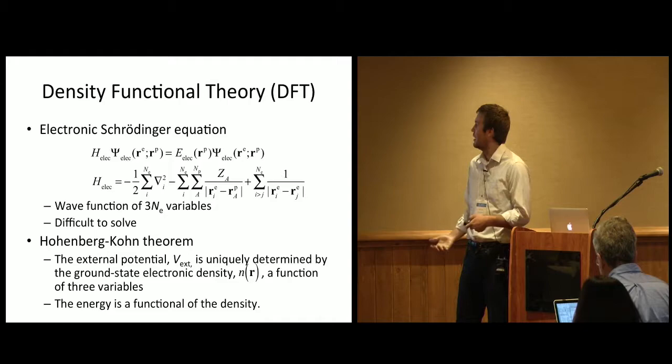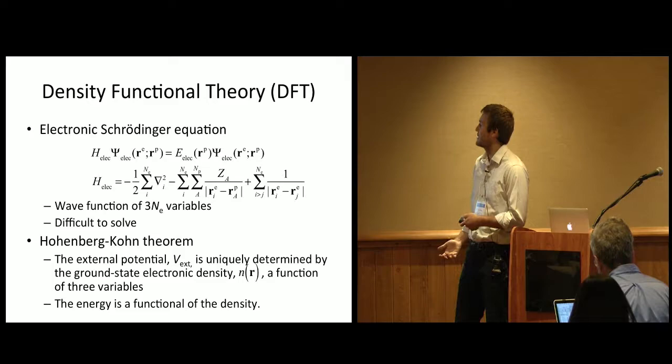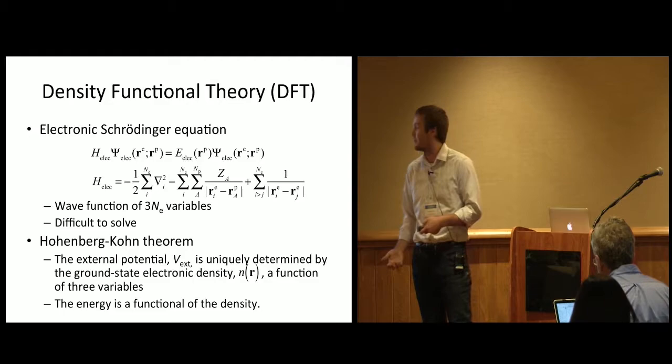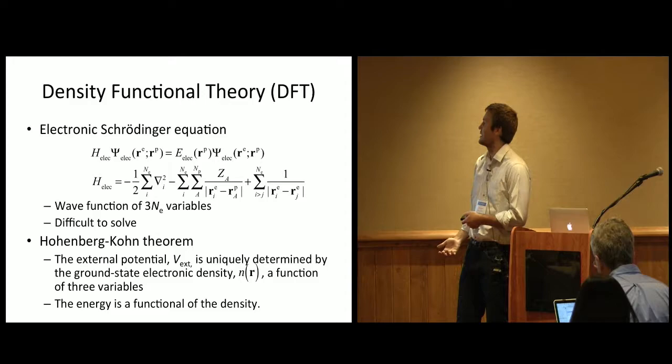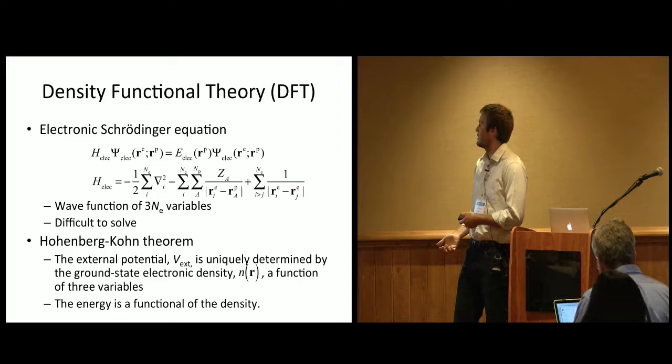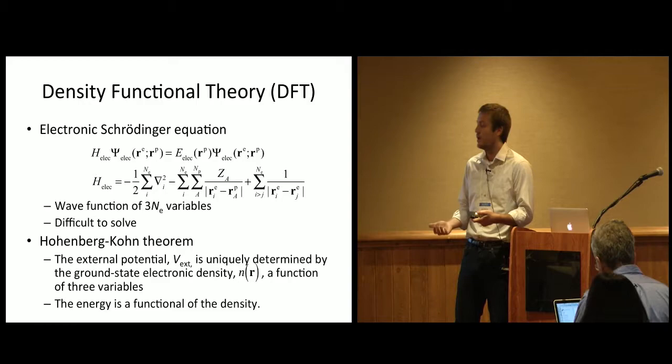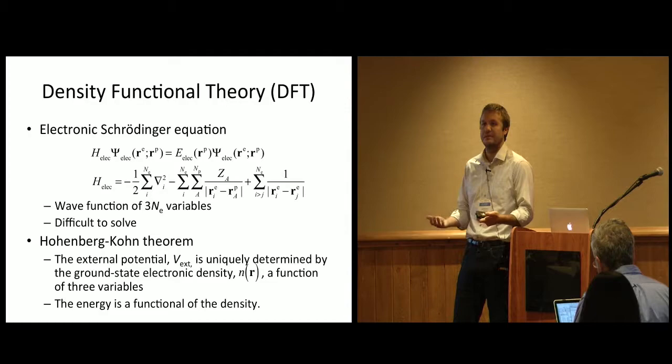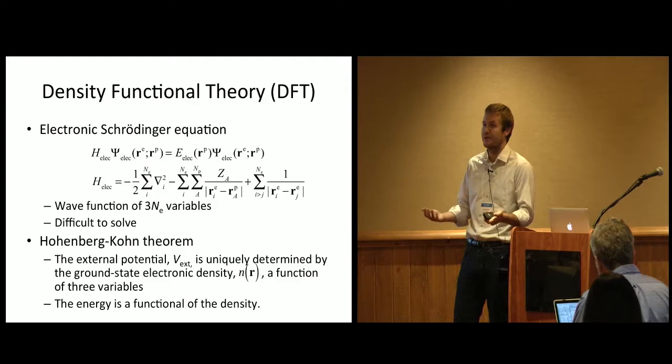An alternative way of doing quantum chemistry, then, instead of working with a wave function, you can work with a density. And this is because of what's called the Hohenberg-Kohn theorem from the 60s. It says the external potential, V external, is uniquely determined by the ground state electronic density. In this case, the external potential is just the classical nuclei. The reason this is nice is the density is a function of three variables instead of three Ne variables, so it's a much simpler entity to use. From the Hohenberg-Kohn theorem, you can show that the energy of the system is a functional of the density.